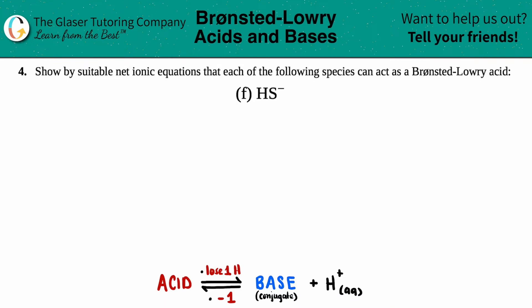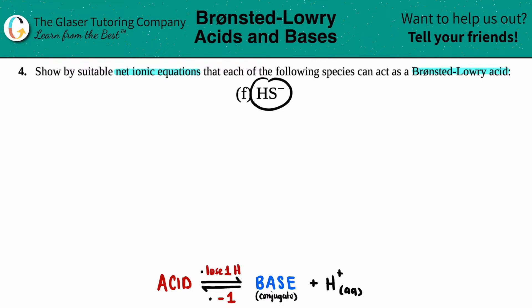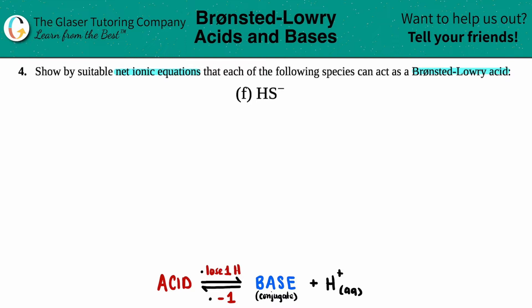Number four: show by suitable net ionic equations that each of the following species can act as a Brønsted-Lowry acid. We have letter F, so we just have to show that HS⁻ can act as a Brønsted-Lowry acid via a net ionic equation.